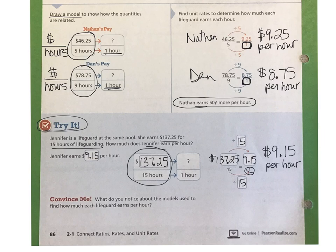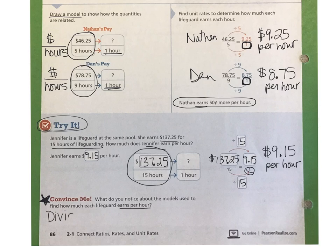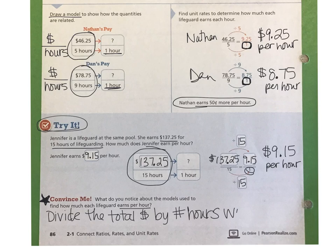Jennifer's hourly pay is $9.15 per hour. The Convince Me at the bottom asks us to summarize what we just learned: what do you notice about the models used to find how much each lifeguard earns per hour? In all three cases — for Nathan, Dan, and Jennifer — what did we do to find the amount they earned per hour? The answer is we divided: we divided the total dollars by the number of hours worked.